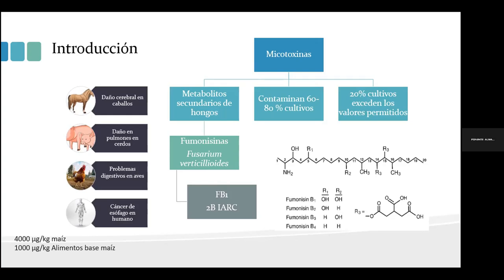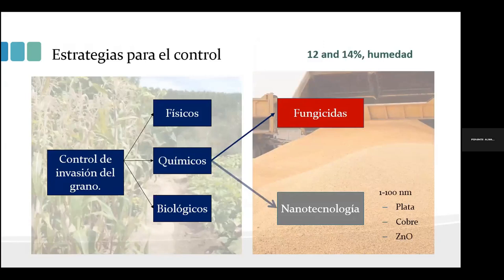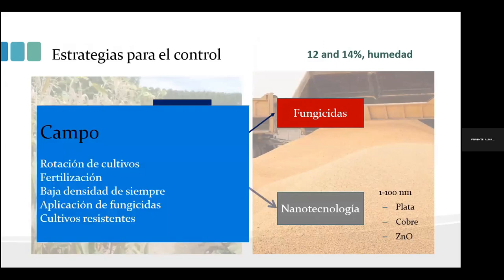Todo esto hace importante establecer estrategias para el control del crecimiento del microorganismo y para inhibir la síntesis de fumonicinas. Varias estrategias se han implementado: aspectos físicos, químicos y biológicos. En el campo se ha procurado el control mediante rotación de cultivos, fertilización, baja densidad de siembra o aplicación de fungicidas.